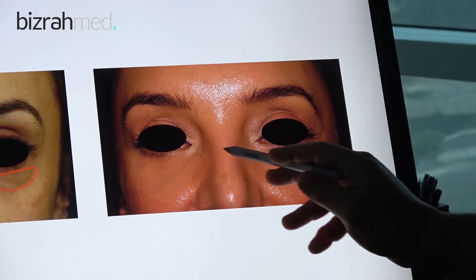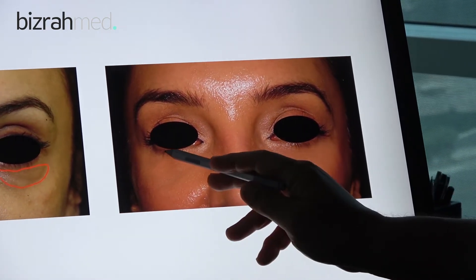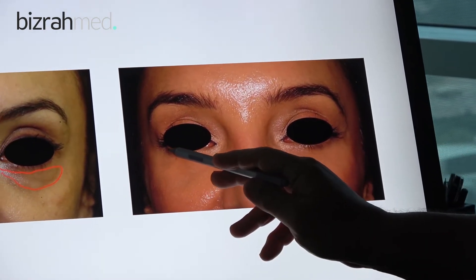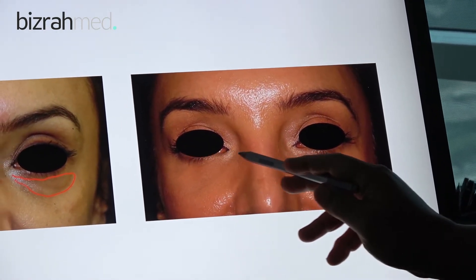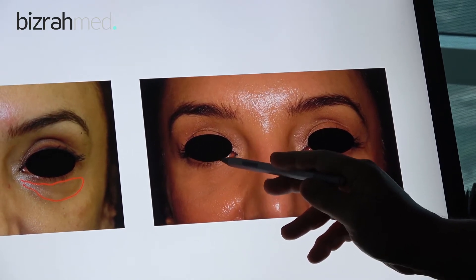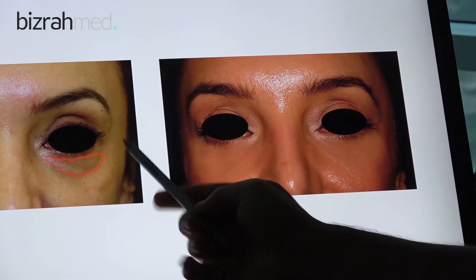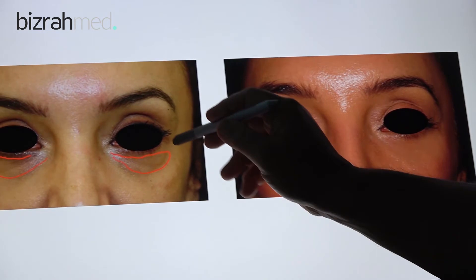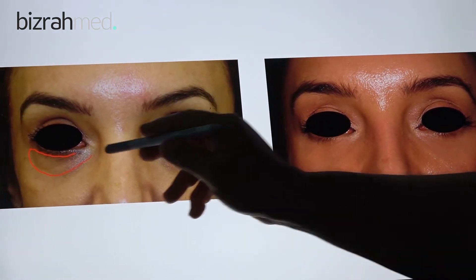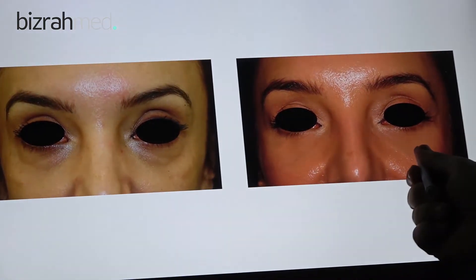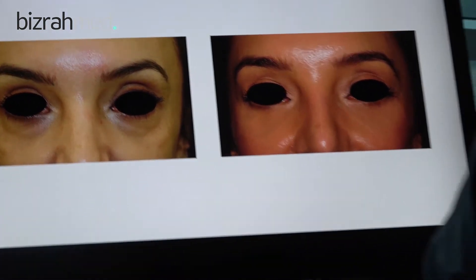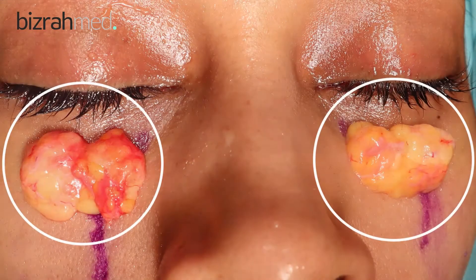What I mean by trans-conjunctival approach is without any scar from outside. It was done by a hidden incision from behind the eyelids, and this is the result showing the difference between before and after. This was the fat which was removed during surgery from under the eyelids.